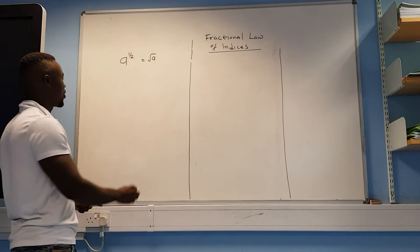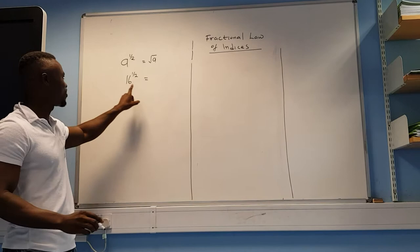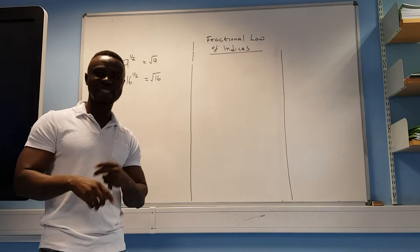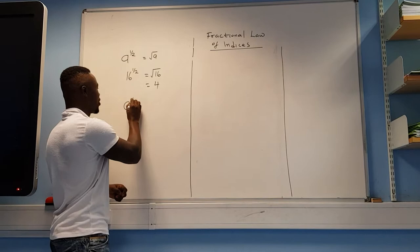For example, 16 to the power of a half is not the same as 16 times a half, which gives you 8, nor does it mean half of 16. The half means the square root of 16. Square root of 16 means find a number that when multiplied by itself gives you 16. So 4 times 4 is 16, meaning the square root of 16 is 4.